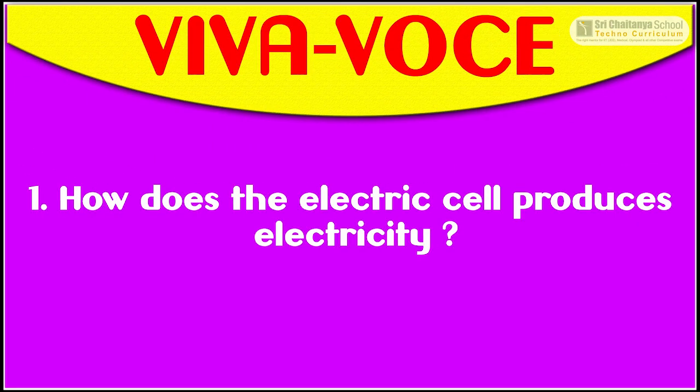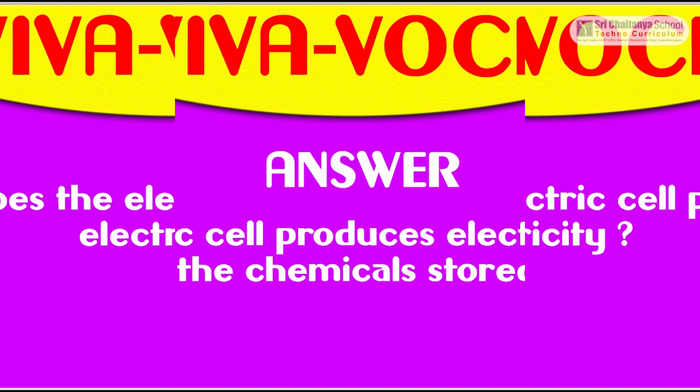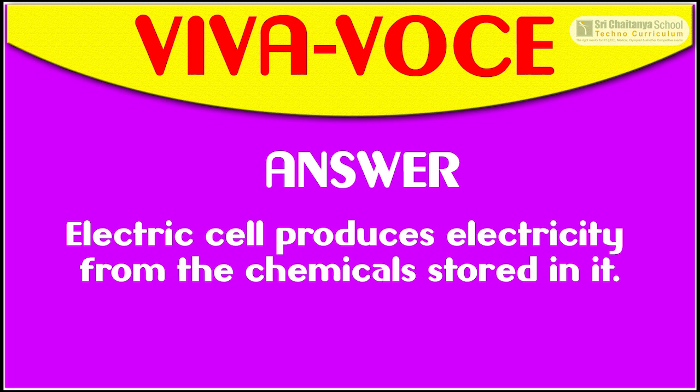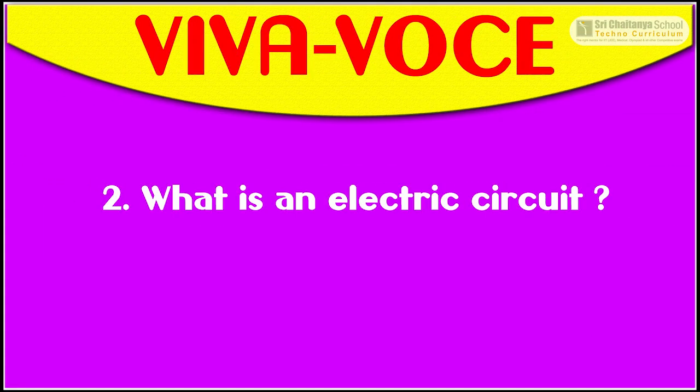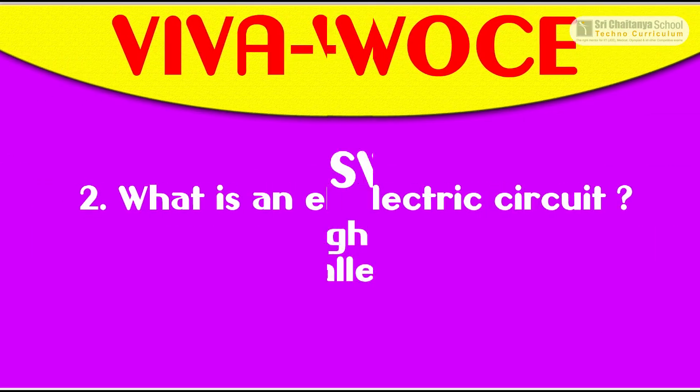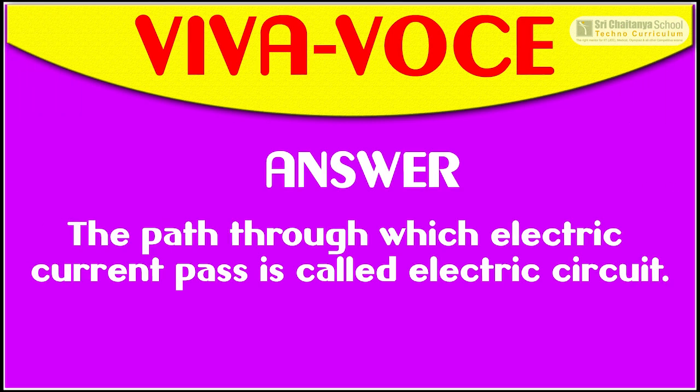Based on this experiment, I will ask a few questions. The first question is: how does the electric cell produce electricity? The answer is: an electric cell produces electricity from the chemicals stored in it. The second question is: what is an electric circuit? The answer is: the path through which electric current passes is called an electric circuit.